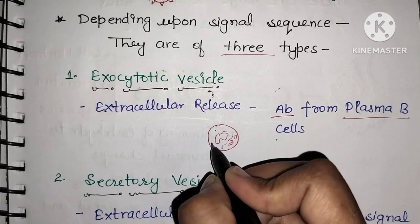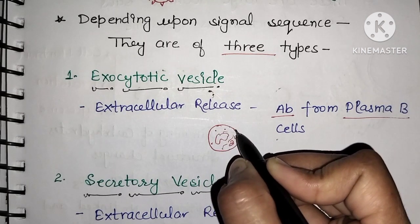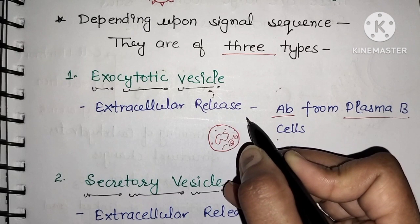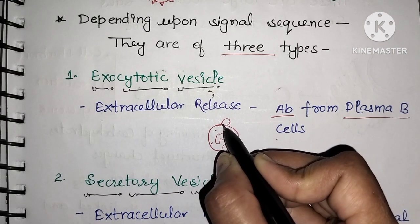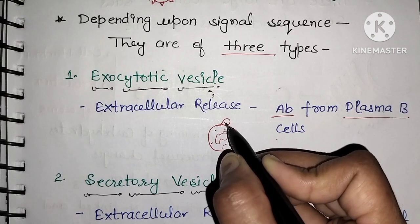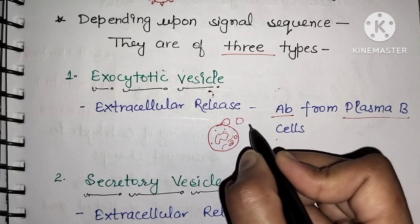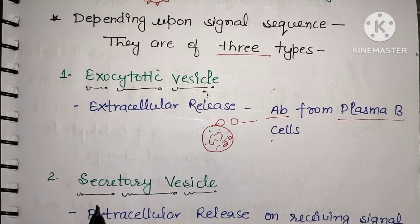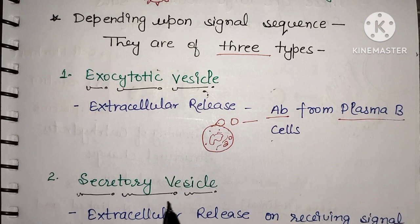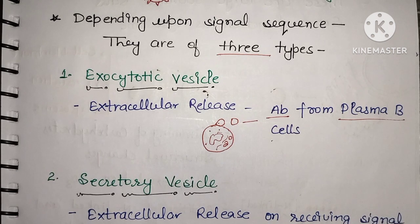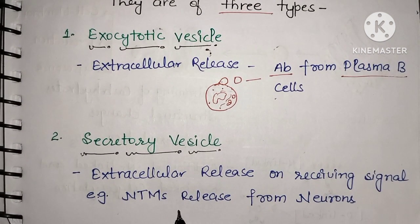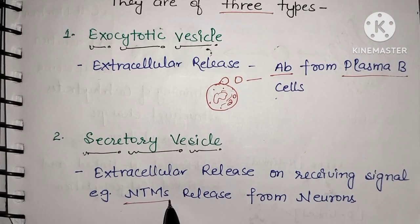If the proteins are to be sent out of the cell, they will be released extracellularly via exocytotic vesicles. The second type is secretory vesicles — these are used when cells need to send proteins to a specific destination. For example, neurotransmitters are packed in secretory vesicles and released by neurons to transmit signals.